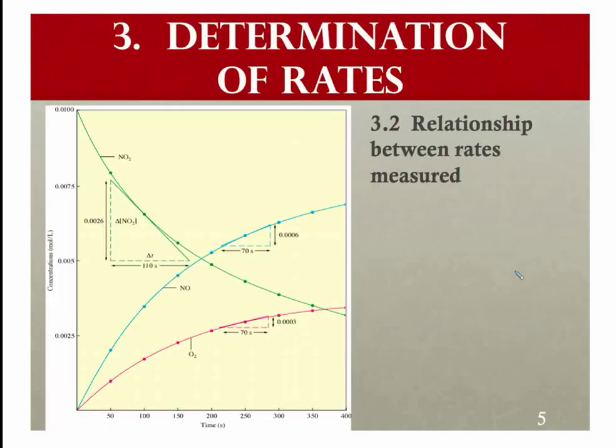This is where we left off in the last video, looking at the relationship with rates. It's important to note not only at what point the rate is measured—whether it's instantaneous, initial, or an average rate—but you also want to make sure you pay attention to what the rate is measured with respect to. You see that NO₂ decreases at roughly the same rate that NO increases, but oxygen's only half of both of those.